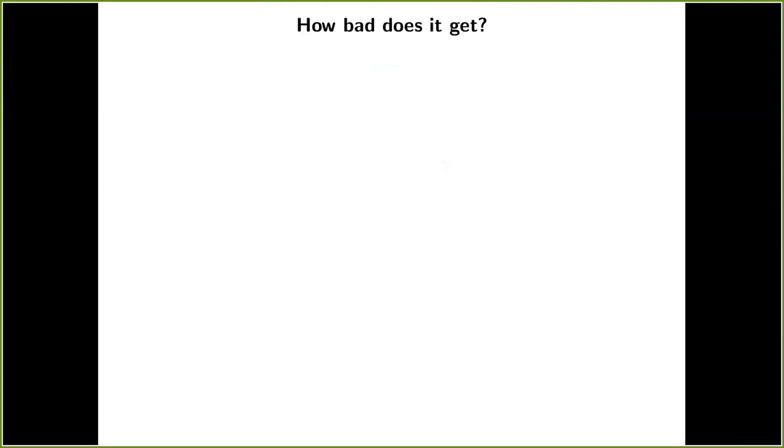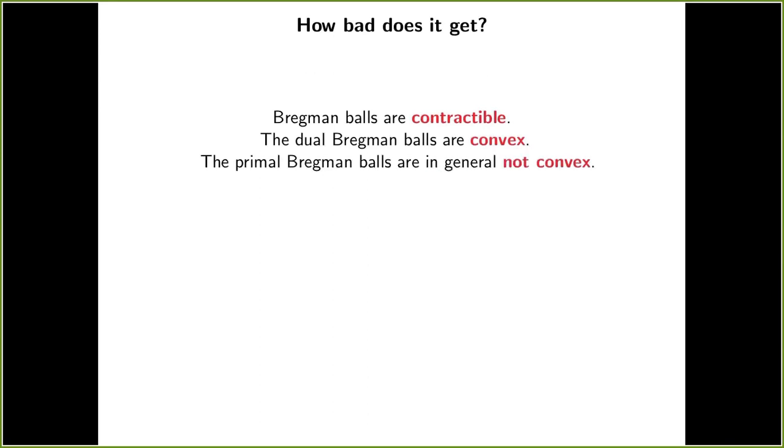Bregman balls are contractible and the dual Bregman balls are convex. The primal balls are in general not convex. However, the intersection of Bregman balls is always either empty or contractible. And thus, we can apply the nerve lemma.